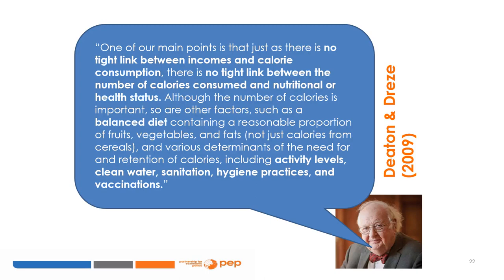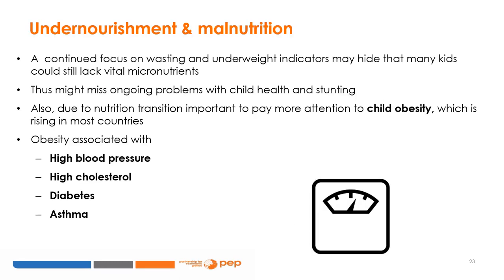Deaton and Drez's 2019 paper considers the puzzle of India and why there have been income increases and a decrease in poverty, but without reductions in undernutrition and stunting. They make two important points: first, there is not a tight link between incomes and calories consumed — people don't necessarily prioritize food. Similarly, there is not a tight link between calories consumed and nutrition. Calories are as important as what type of food is consumed, especially fruit and vegetables, and calorie needs depend on activity levels, access to clean water, sanitation, hygiene practices, and vaccinations. A continued focus on wasting and underweight indicators may hide that many kids could still lack vital micronutrients. Child obesity is rising in most countries due to the nutrition transition, contributing significantly to the burden of disease through its association with high blood pressure, high cholesterol, diabetes, and asthma.